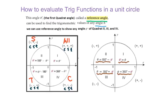Here is the formula. For the first quadrant, all the angles are reference angles. For the second quadrant, we use 180 degrees minus that angle to get the reference angle.